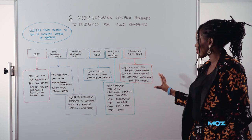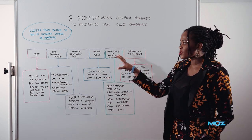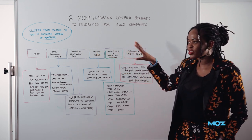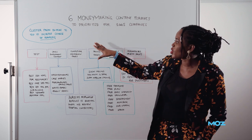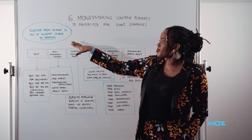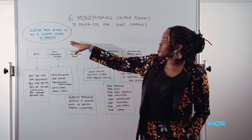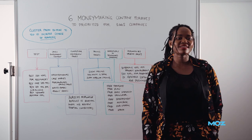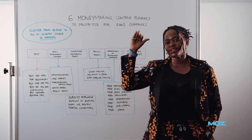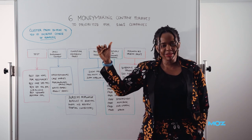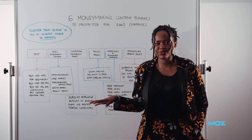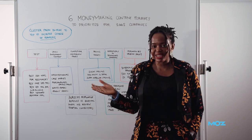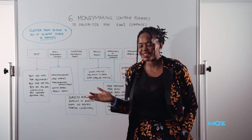Before I get into all of this, I just want to start by saying that when building clusters, doing research, or creating content, you should always start from the bottom to increase your chances of ranking and then make your way to the top. The reason being that at the top of the funnel, the keywords are extremely competitive, have tons of search volume, and the likelihood of a small business or small website ranking for those keywords is very rare.